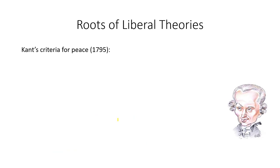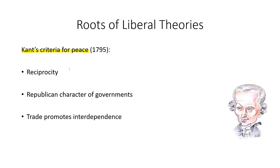The roots of these liberal theories go all the way back to the Enlightenment and Immanuel Kant, a philosopher whose writings put the label of Enlightenment on that period. He was quite foresightful, looking at ideas that could, in the future, create institutions for peace — such as the concept of reciprocity, where I will treat you as I would want you to treat me, and then putting that on the state level, where states would treat each other as they would want to be treated.